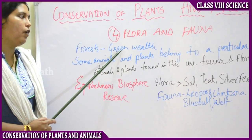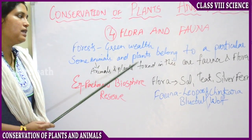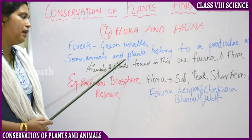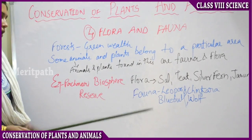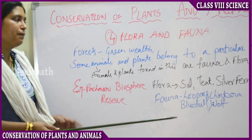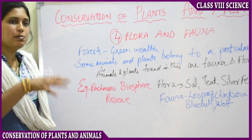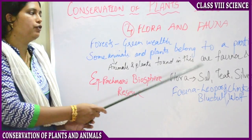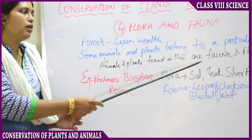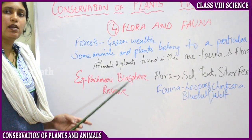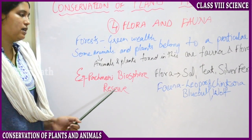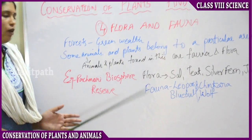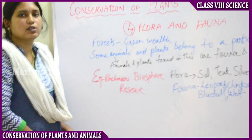So, flora and fauna refers to the plants and animals belonging to a particular area. In the Pachmari Biosphere Reserve example, we saw which flora and fauna are being conserved there.